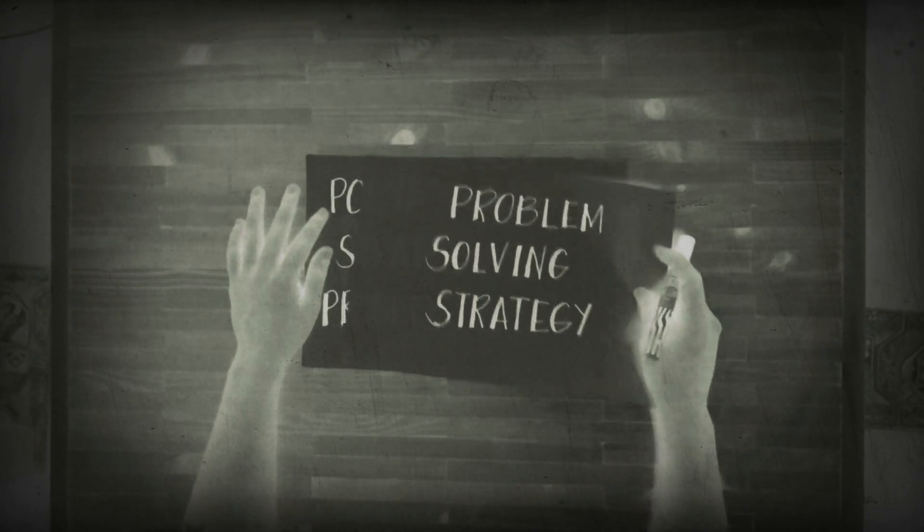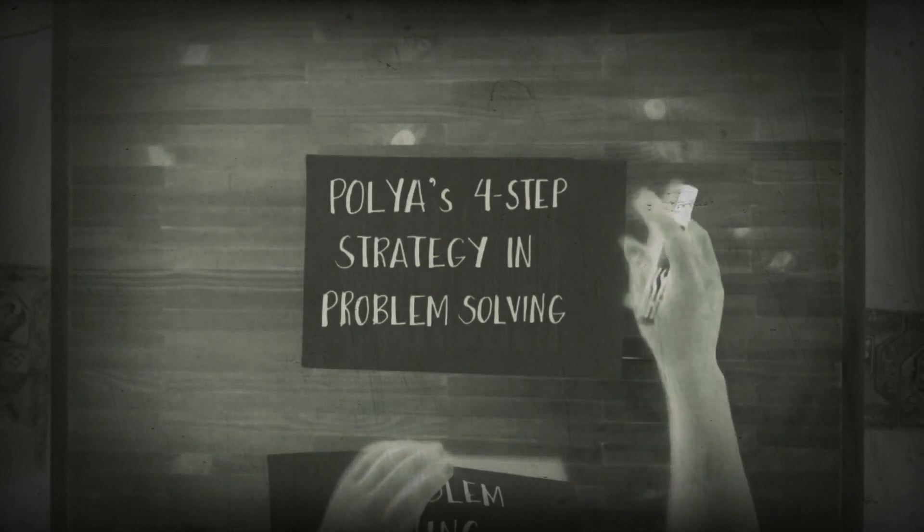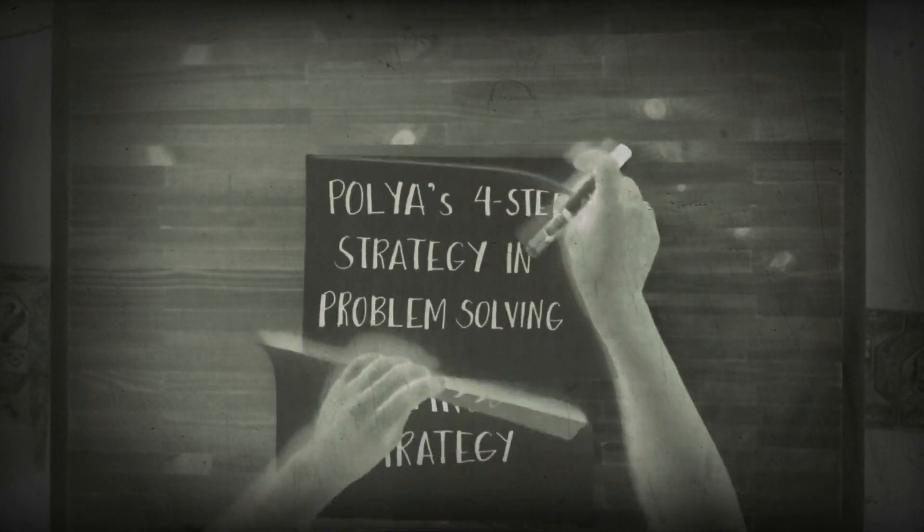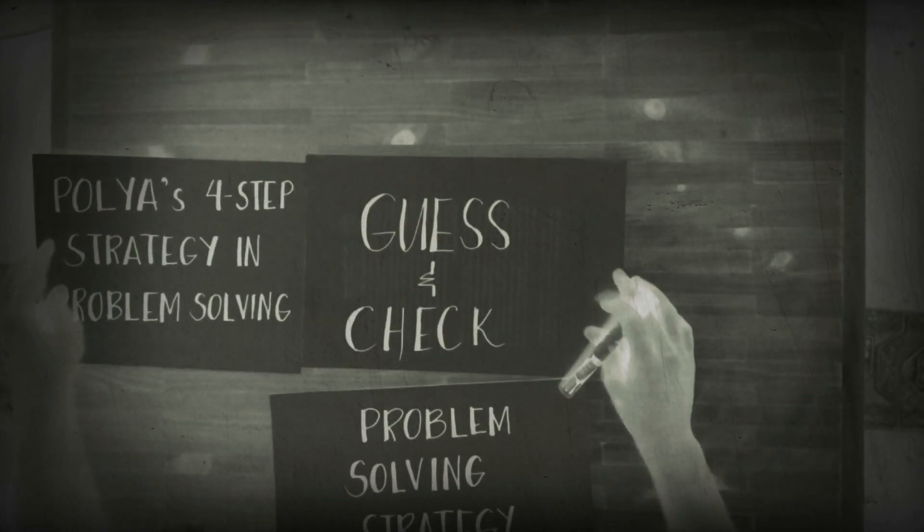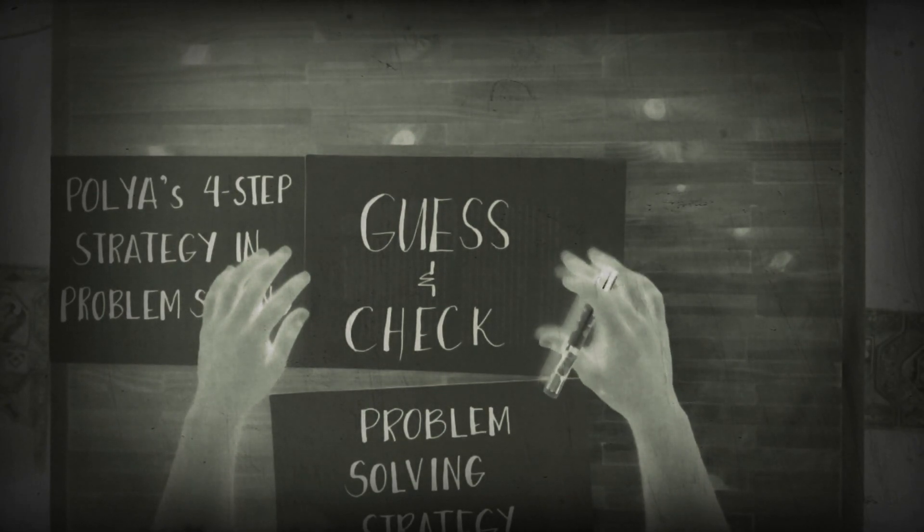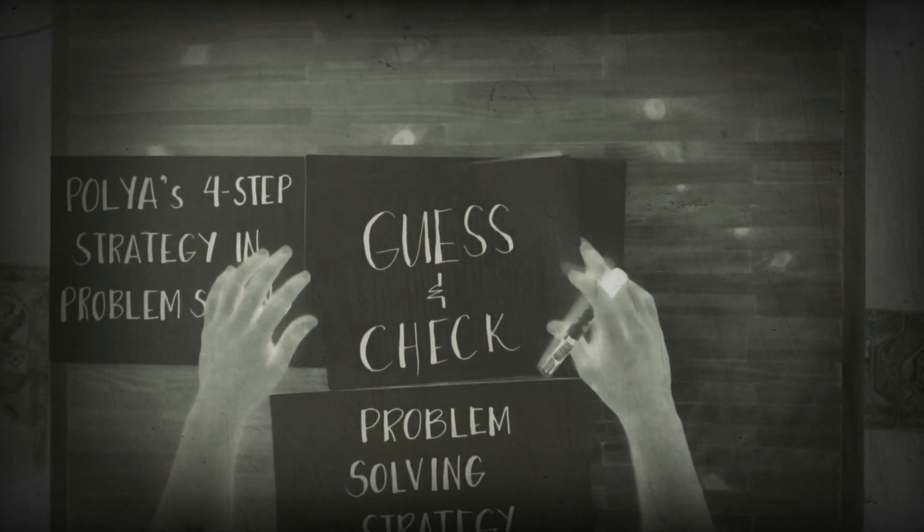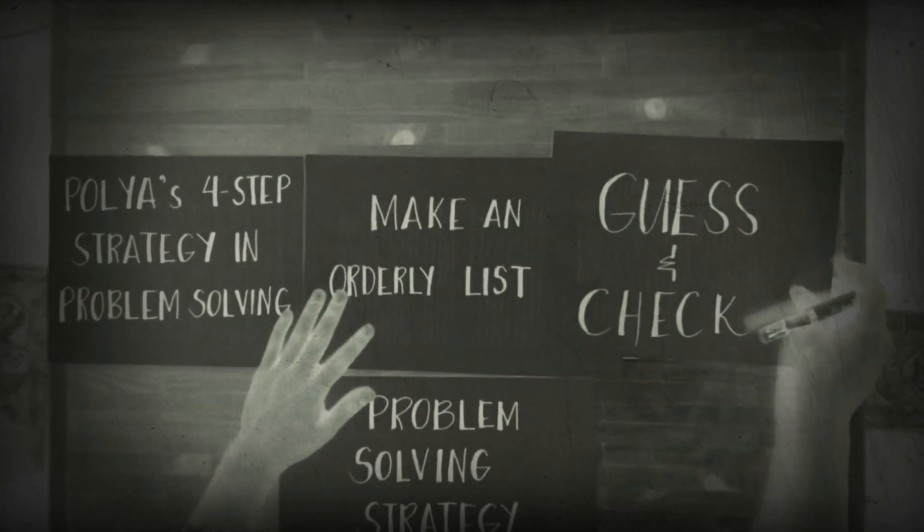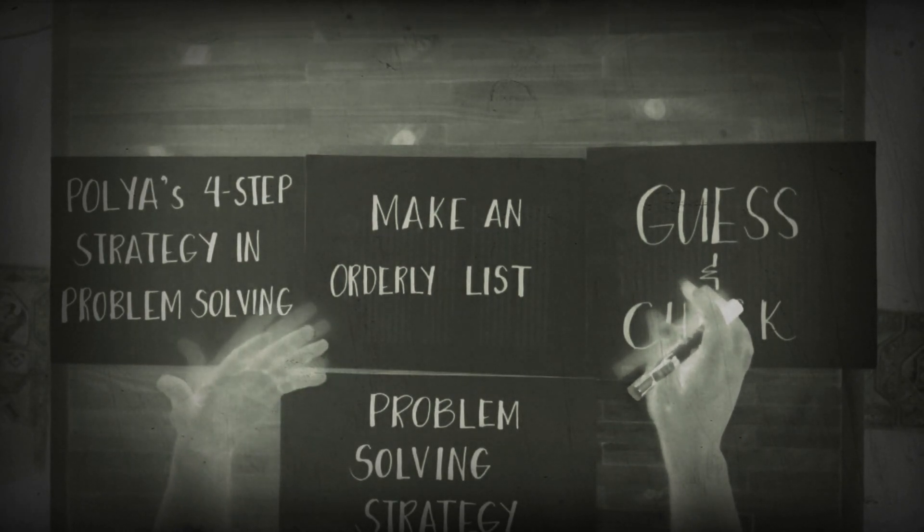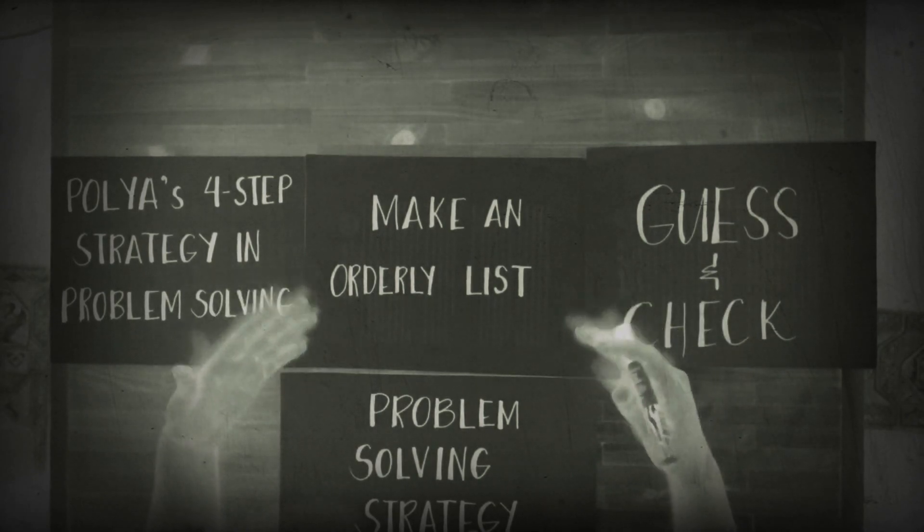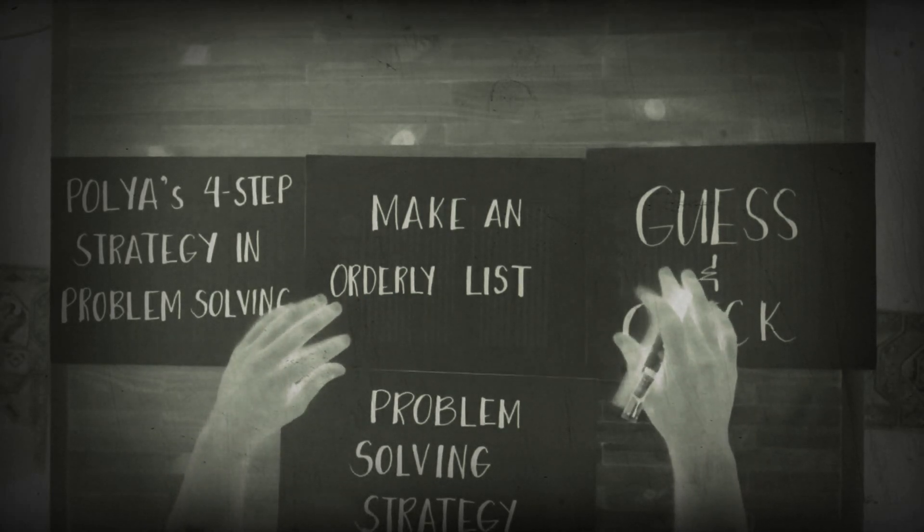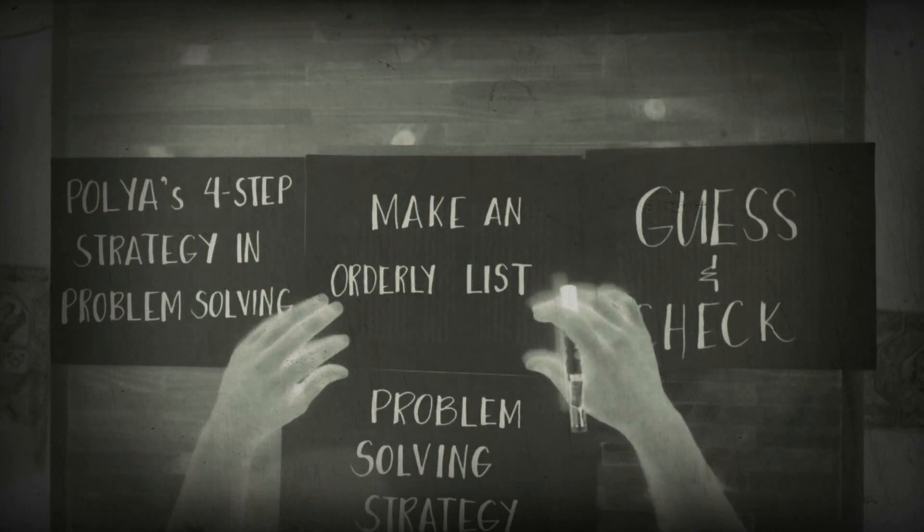I'll be discussing different strategies in problem-solving. What are the different strategies? The most famous one is Polya's four-step strategy in problem-solving. The other one is the guess and check, we also call it as trial and error method. The other one is make an orderly list. In this method you just have to list down the possible answers until you reach the final number.